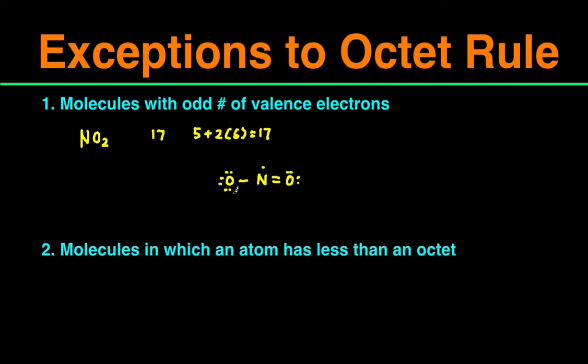And then from the structure, you can see that the oxygens have eight valence electrons around them: 2, 4, 6, 8. This oxygen also has eight electrons around them: 2, 4, 6, 8.